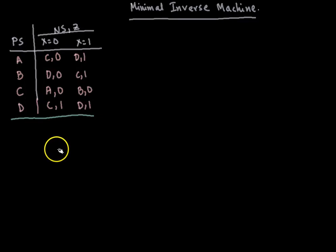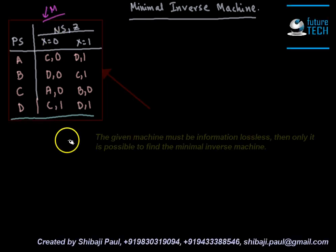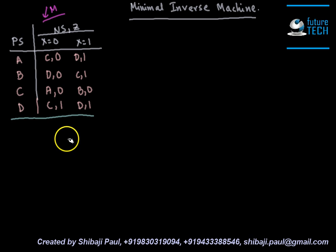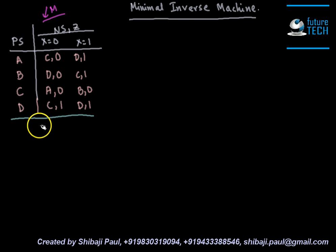In this tutorial I am going to show you how to find out the minimal inverse machine for a given machine M. In order to find the minimal inverse machine, first you need to check whether the given machine is information lossless or not by developing a testing table. If the lower part of the testing table doesn't contain any repeating state, then it is an information lossless machine and we can find the minimal inverse machine. This given machine I have already checked is information lossless, so we can build the minimal inverse machine for this.